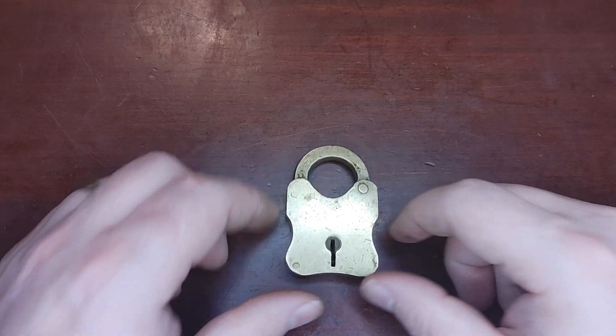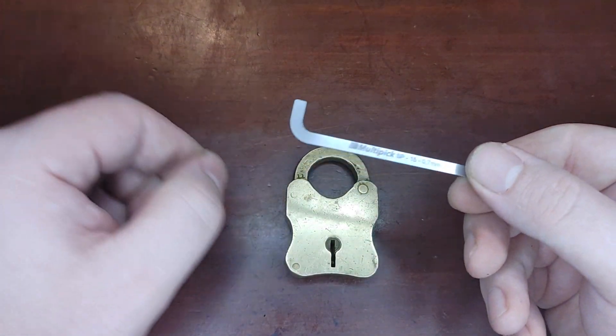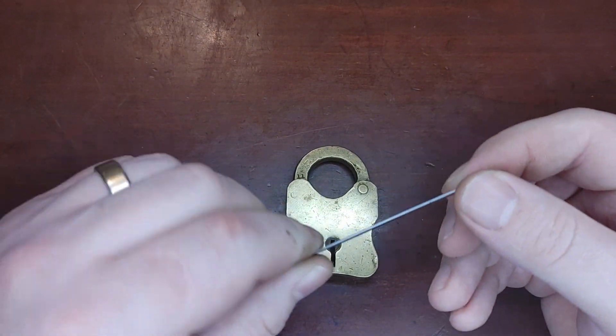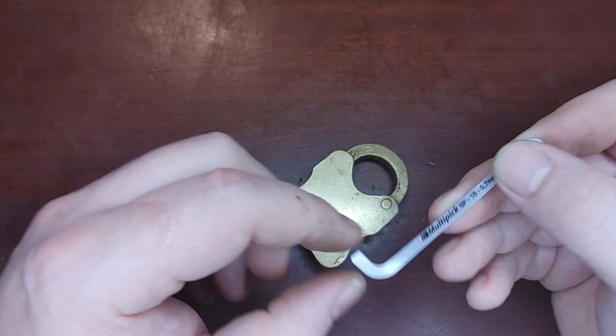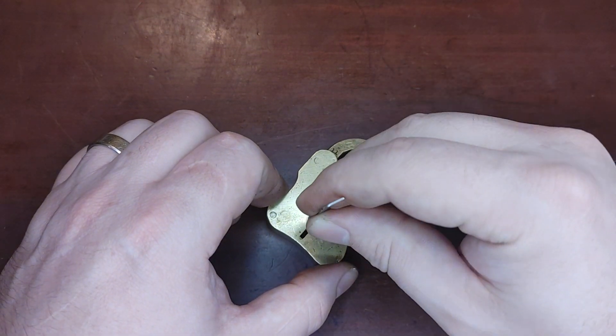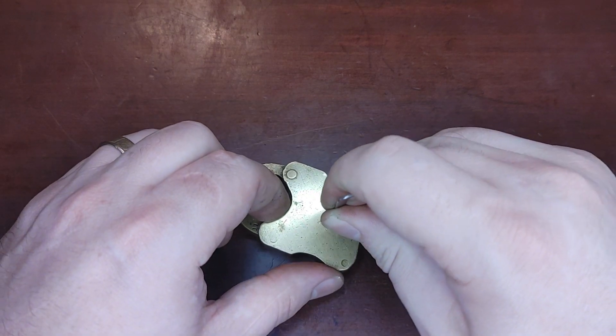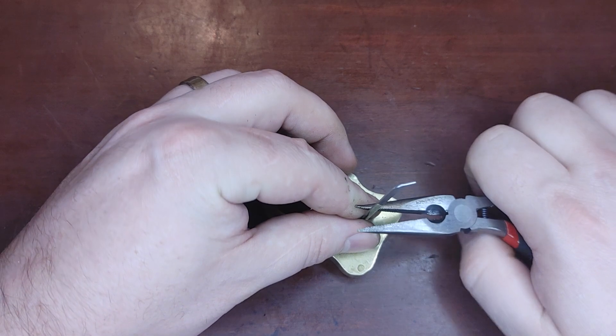I don't think they normally do that on lever locks. That made me definitely want to keep trying. What I used to open this was one of my multi-pick turning tools. There's a whole bunch of different lengths and shapes of the turning tools, so I can go through them and see which one fits in the keyway to turn.